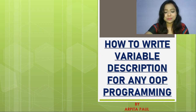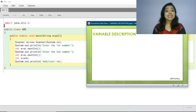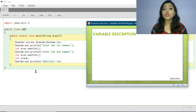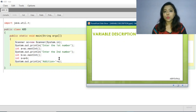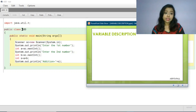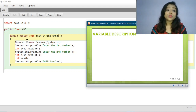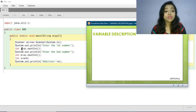You can see on the screen there is a program I have already written. This is the program to accept two numbers and display the sum. I will show you how to write the variable description for this program. I have declared a class named 'add', and within that I have created the object of the Scanner class, then printed a statement to enter the first number, using variable 'a' to store that value.